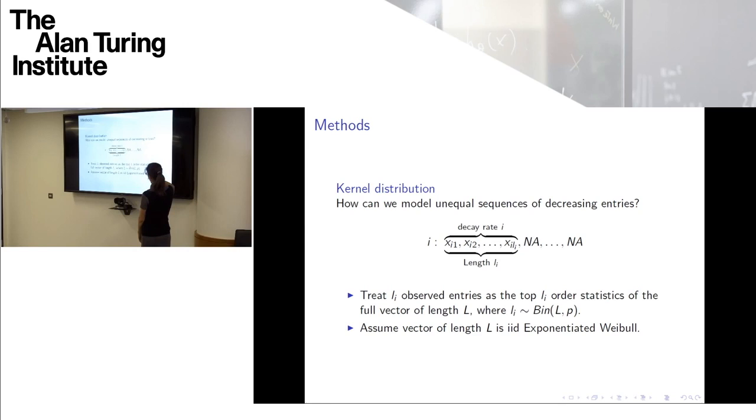So here, we say that the observed entries, the number of observed entries is actually binomially distributed, with L trials. So in this case, although it doesn't have to be, we're saying that in fact, all the vectors are of the same length. But they just have some of them missing. And then there's an underlying probability P that tells you, for each cluster, how likely it is that each observation is, each cross-elasticity is observed.